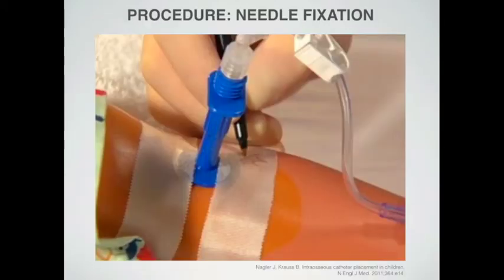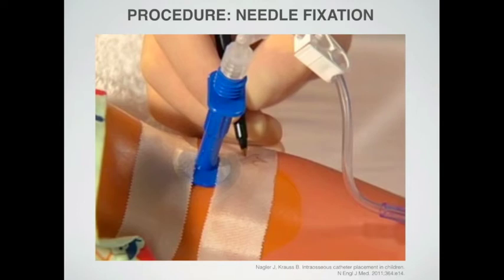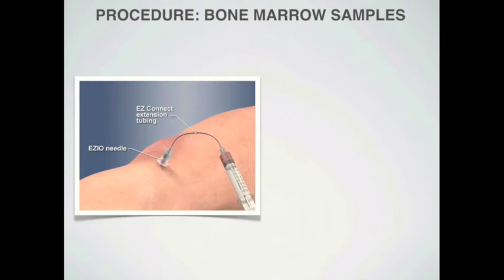Now that we are sure the needle is in the correct place, we need to secure it — this can be done with tape or commercial dressings. Materials used must be transparent so you can see the tissue around the insertion site and promptly notice any signs of extravasation. It is good practice to write down the exact time IO access was gained, which can also be noted on the dressing. Another good tip is not to connect the syringe directly to the needle — as this can easily dislodge it — but to use extension tubing. Before starting any fluids, consider sending bone marrow samples for laboratory tests, making sure to properly label them as IO samples.